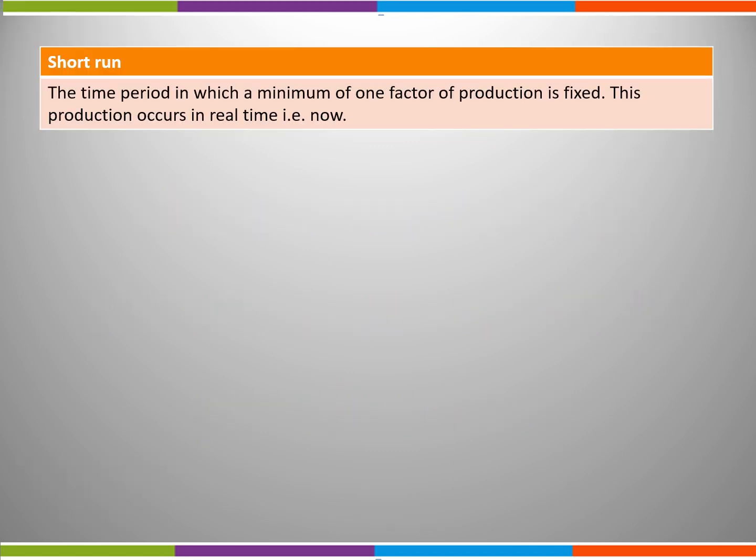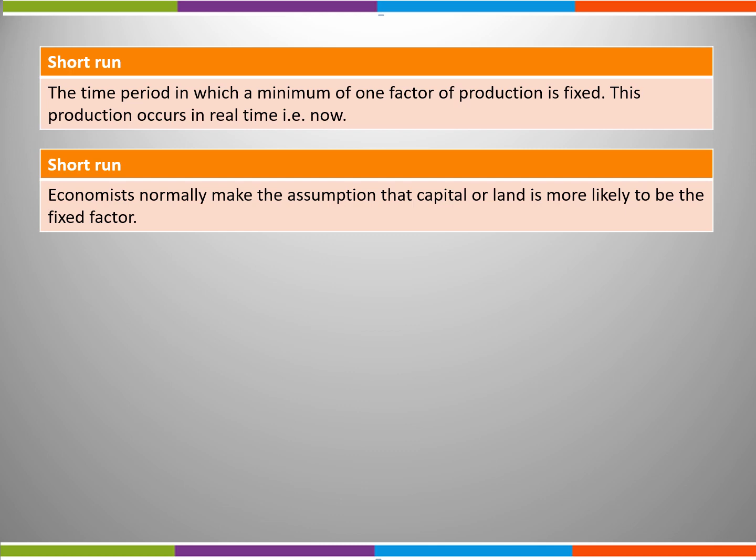Short run is the time period in which a minimum of one factor of production is fixed. This production occurs in real time. Economists normally make the assumption that capital or land is more likely to be the fixed factor. It's difficult to build a new factory in a short period of time or access land to build the factory on.